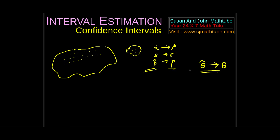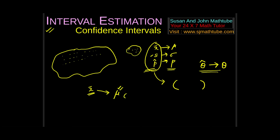There is something called interval estimation. In interval estimation, using the sample statistic we provide a confidence interval — an interval with some sort of guarantee. For example, we know x̄, and with the help of x̄, sample standard deviation, and sample size, we predict with some percentage of confidence that the population parameter mu will be between some lower limit and an upper limit. Such estimation is called interval estimation.